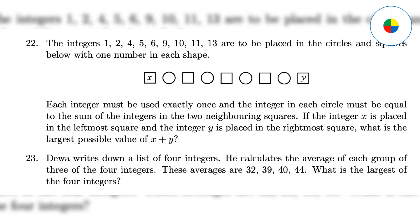Question 23 - Assume the four numbers are A, B, C, and D. Then, A plus B plus C is 32 times 3, which is 96. A plus B plus D equals 117. A plus C plus D equals 120. And B plus C plus D equals 132. Add up all the numbers from both sides. A plus B plus C plus D equals 155. Then you can figure out the value for those four numbers. 59 is the largest number.